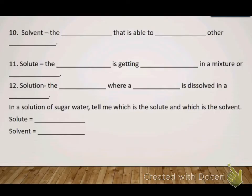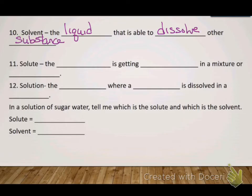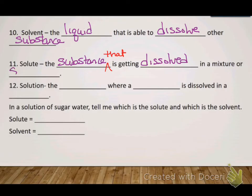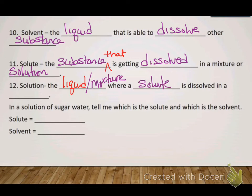A couple more terms we need to recognize: sometimes things will talk about a solution being hyper or hypotonic instead of the cell. Solvent is the liquid that is able to dissolve other substances. Solute is the substance that is getting dissolved in a mixture or solution. A solution is the mixture where a solute is dissolved in a solvent. For example, if you take water and put sugar in it and stir it up until the sugar disappears — one of those is the solute, one is the solvent. Write that in the spot on your paper.